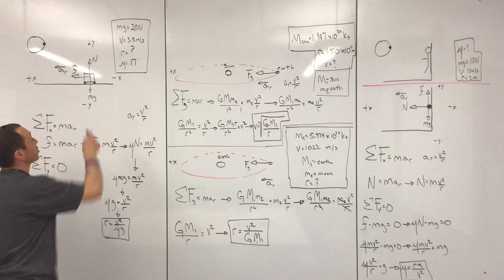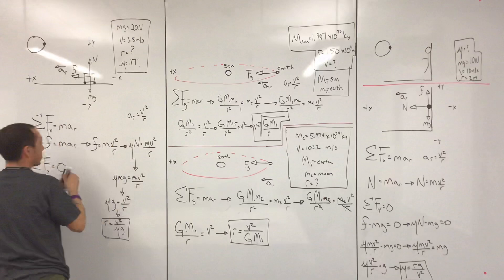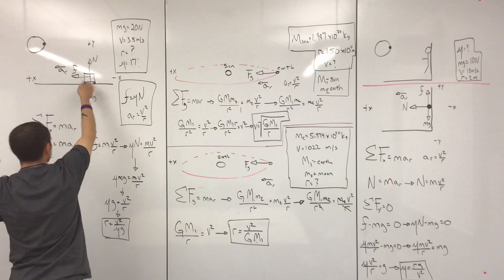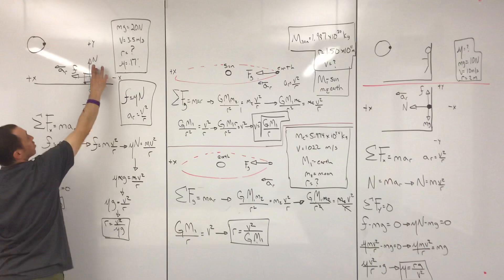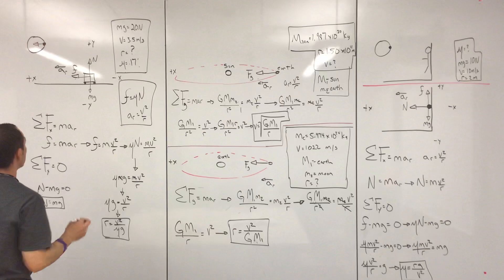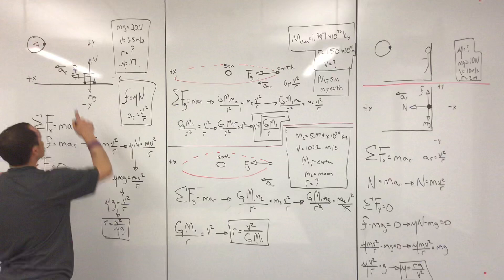We were given the weight, the speed, and the mu of the track, which is part of friction — friction equals mu times the normal force. For our free body diagram, the car is moving into the circle, so it's balanced on the ground: weight down, normal force up — those are balanced in the Y direction. And then it's moving in a circle, so there's a net force towards the center of motion, which in this case is the friction. That friction is the force towards the center of motion, giving us a radial acceleration.